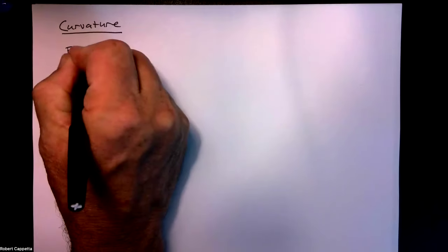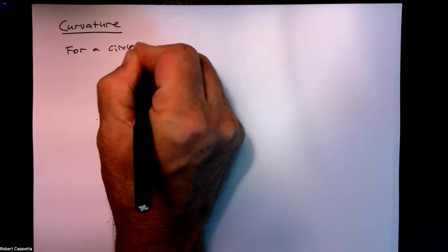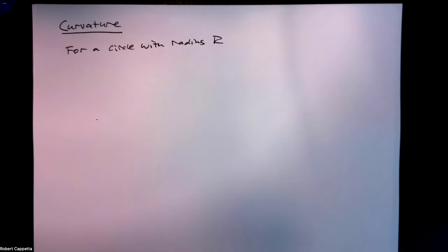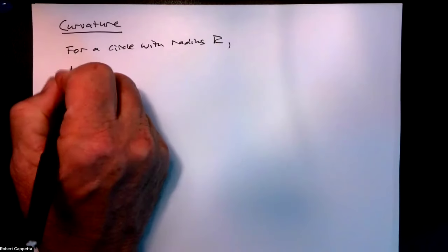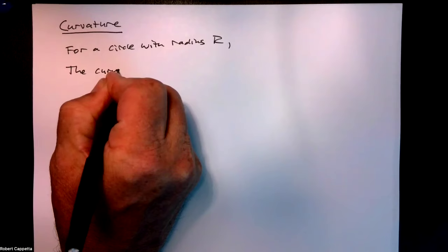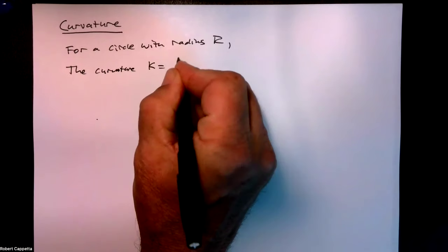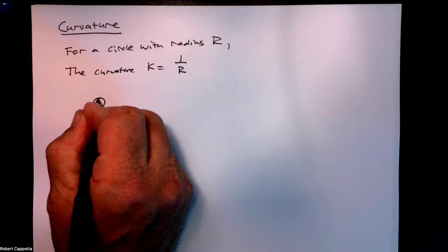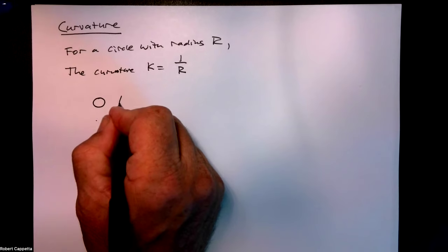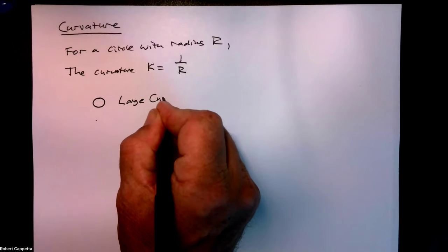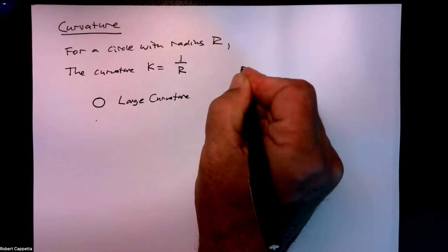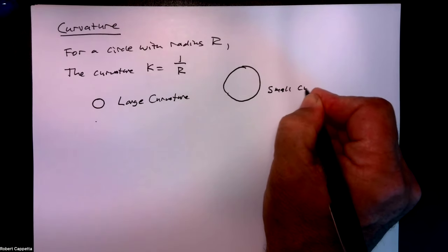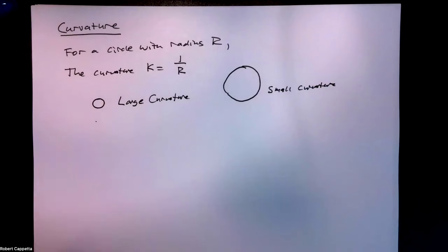For a circle with radius r, the curvature k is 1 over r. So if I have a small circle, this is going to have relatively large curvature — 1 over a small number is going to be a large number — whereas a large circle is going to have relatively small curvature. Can we give ourselves an idea why that might be?